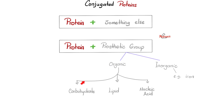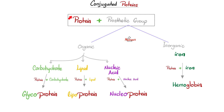Inorganic like iron. Organic could be carbohydrates, lipids, or nucleic acid. So a conjugated protein could be a protein plus carbohydrate — what do you call that? Glycoprotein. Or it could be lipoprotein — protein plus fat. Or nucleoprotein — protein plus nucleic acid. Easy peasy. How about the inorganic iron? Do we have something in our body that has protein and iron in it? Yes, it's called hemoglobin, and it carries oxygen.